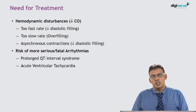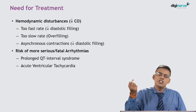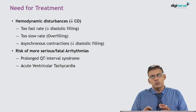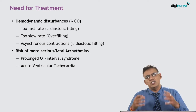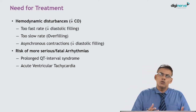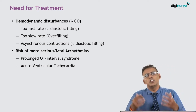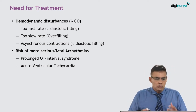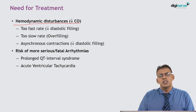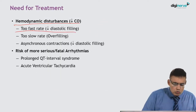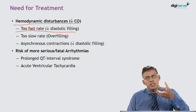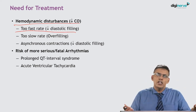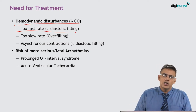Why do we need to treat arrhythmias? The heart's pumping action is responsible for normal oxygenation and supply of nutrients throughout the body. Whenever there is a change in rhythm, rate, origin, or pattern, it disrupts this normal supply, producing hemodynamic disturbances which mainly result in decreased cardiac output. For example, if the rate is too fast, there is lesser diastolic filling, so the heart cannot pump sufficiently during systole, resulting in insufficient supply to the rest of the body.